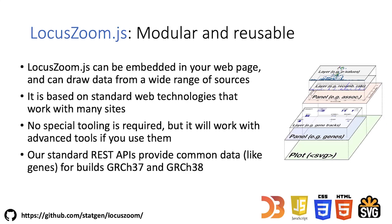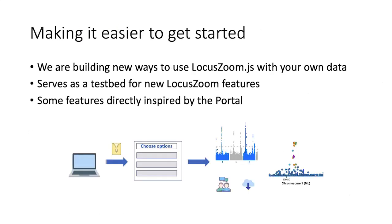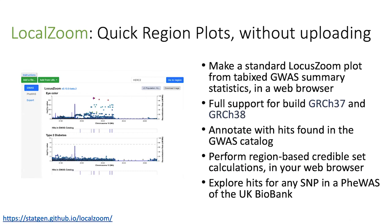We recognize that not everyone wants to build their own web server to visualize their GWAS, so we've been working on lowering that barrier to entry. The first of those tools is called LocalZoom, which is a way to quickly make region plots from tabix-indexed summary statistics that live on your hard drive without uploading your data. This uses a lot of the stuff we've shown, including credible sets, selectable LD population, you can connect to a PheWAS plot and UK Biobank, export your results as a table, and it supports comparisons to multiple datasets — all done in the browser.